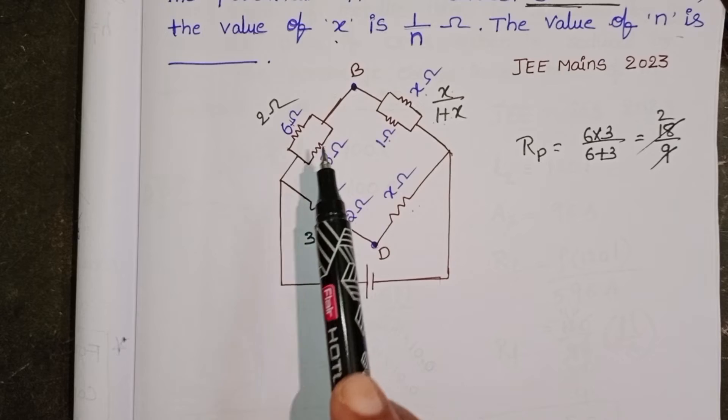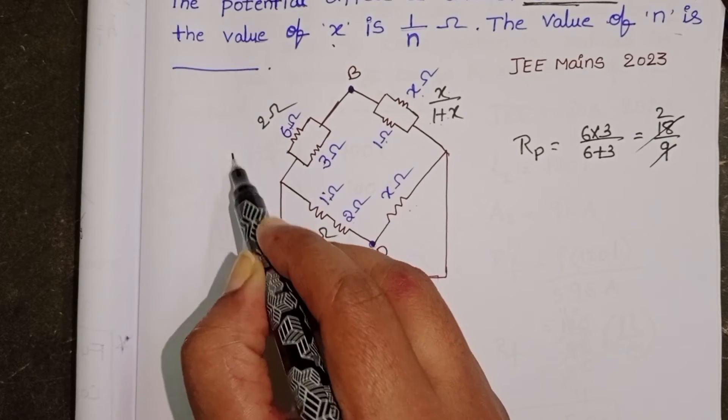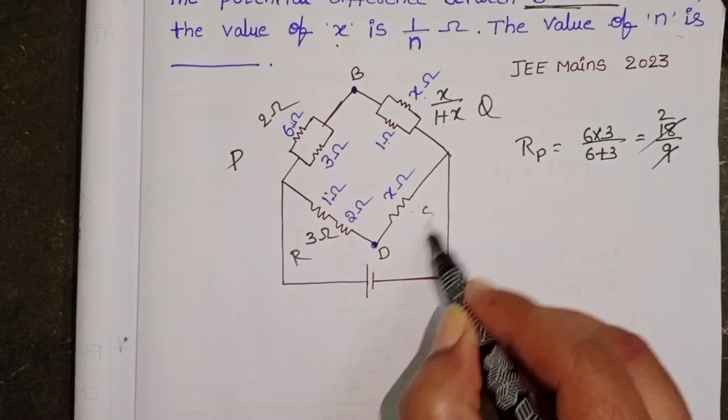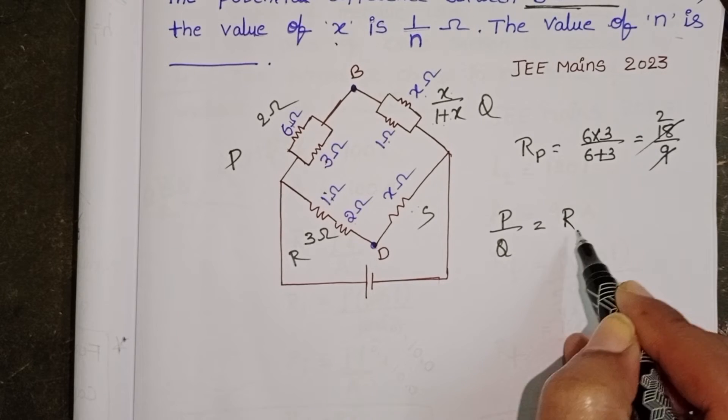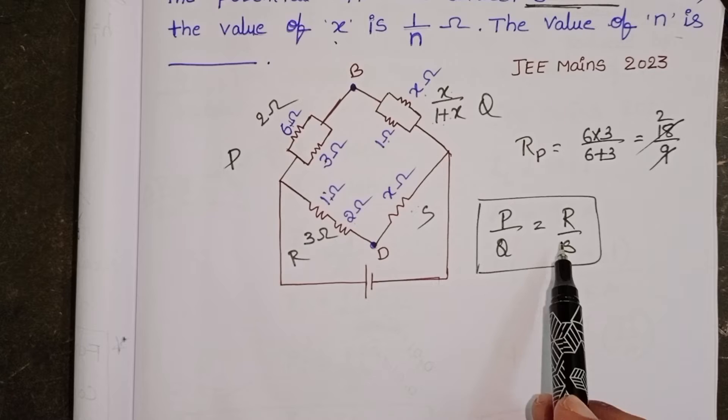The condition for a balanced Wheatstone bridge is: let us take this resistance as P and this is Q and this one R and here S. P by Q equals R by S. This is called a balanced Wheatstone bridge.